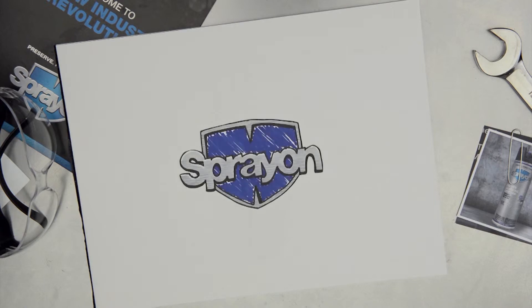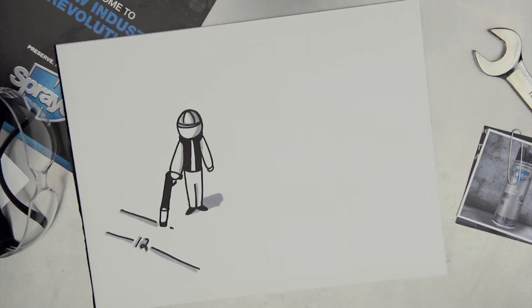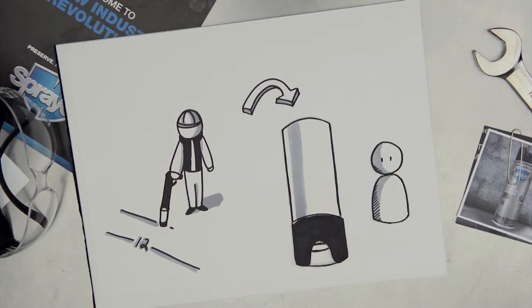So we looked to other industries to see if there were any other technologies we could borrow. Utility locators are marking the ground all day long, and the solution for them was an aerosol can that sprays upside down. We thought that perhaps using the same type of can or cap would be a viable solution for today's power grid maintenance professional.